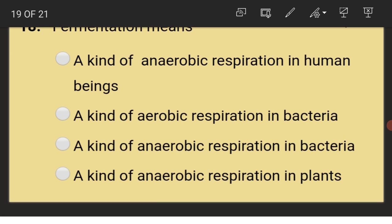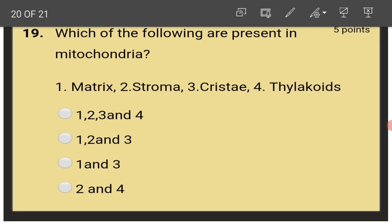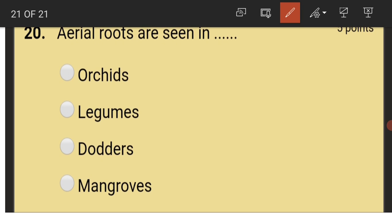Fermentation means a kind of anaerobic respiration in bacteria. Which of the following are present in mitochondria? That is matrix and cristae, 1 and 3. Last bit, aerial roots are seen in mangroves.